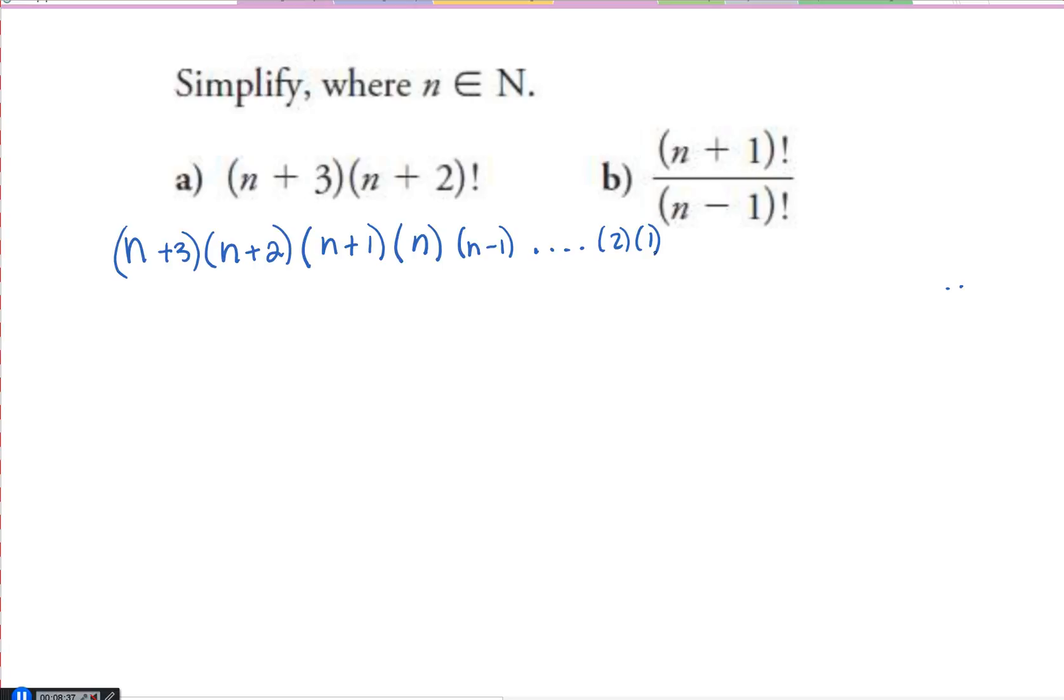Re-look at this. n plus 3, n plus 2, n plus 1, and n. Wouldn't that be the same as saying n plus 3 factorial? And it would. So you're looking at this, and we tacked on 1 greater than at the beginning here. Well, then that just means it's n plus 3 factorial, not n plus 3 times n plus 2 factorial.